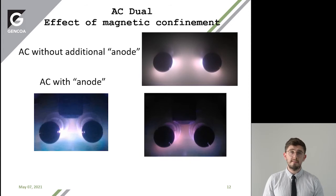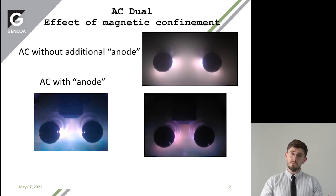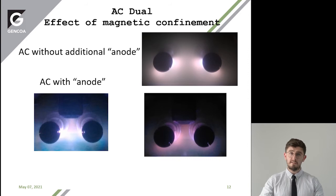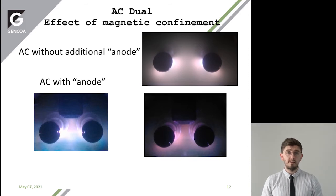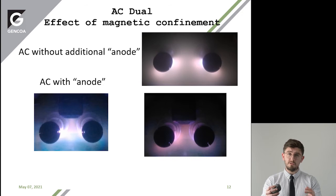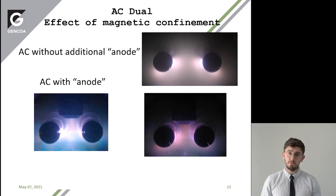For an AC system, you can see in the images on the right that the plasma is more dispersed when there is no active anode, going further into your chamber. And then with the active anode on the left, you can see it's more localized to the region between the two targets, so it's going to be closer to your substrate.